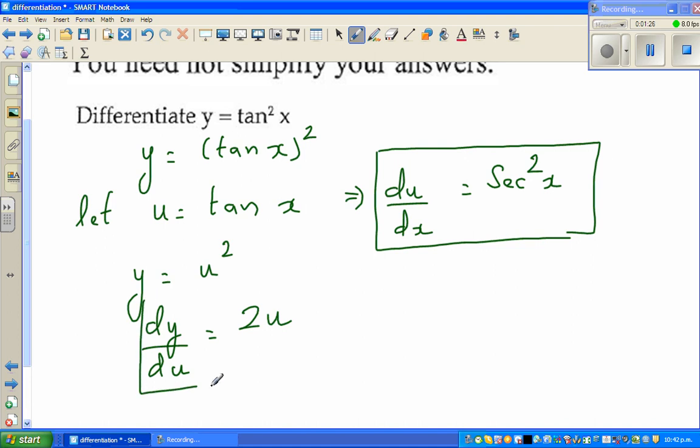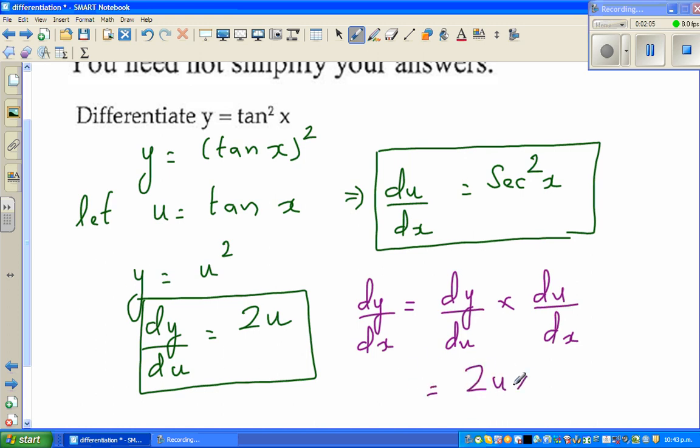I'll now write the chain rule. dy by dx, because here you've got a function y as a function of x. So dy by dx is dy by du times du by dx. This is chain rule. This and this gets cancelled, so what is remaining is dy by dx. What is dy by du? dy by du is 2u times du by dx which is sec squared x.